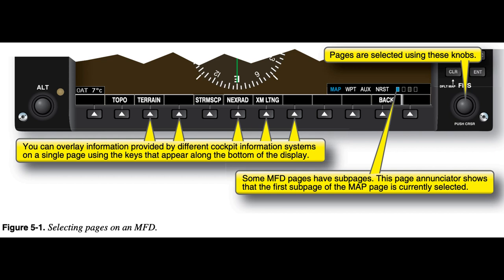As does the Flight Management System, FMS, slash Area Navigation, RNAV unit, the MFD allows you to select different pages from different chapters that display information provided by various aircraft systems. Other controls allow you to combine information from multiple systems on one page. In many installations, the MFD serves as the backup or fail-down display for the PFD. You should have a working knowledge of the fail-down selection procedures and how to select the necessary data displays for the current flight phase.